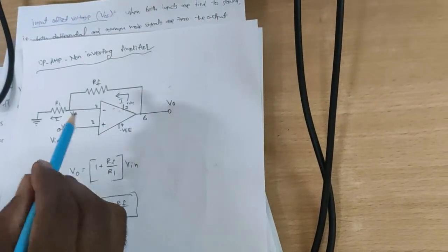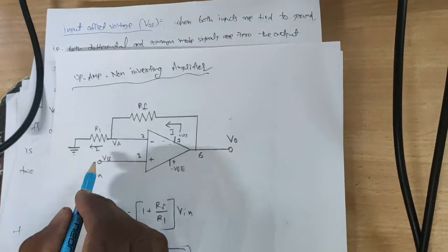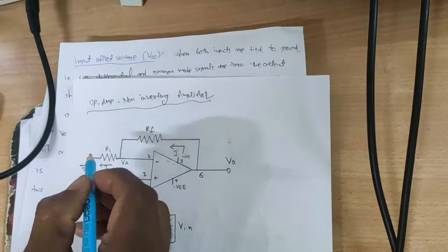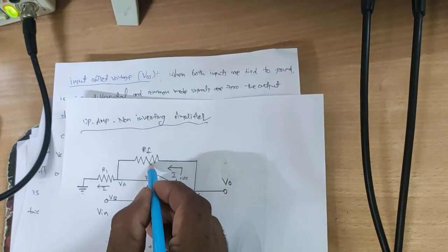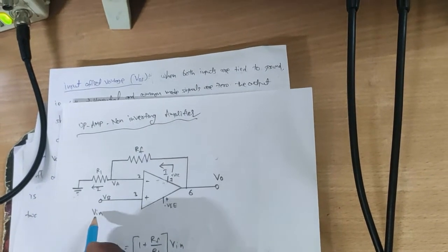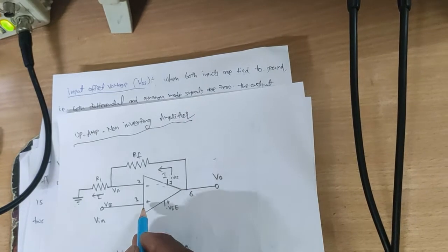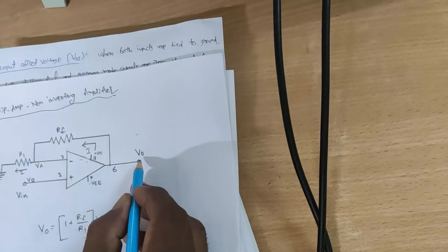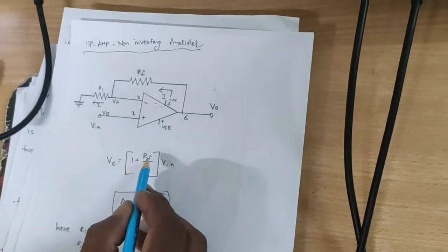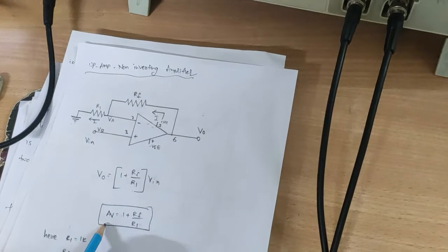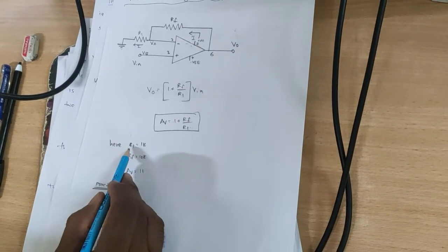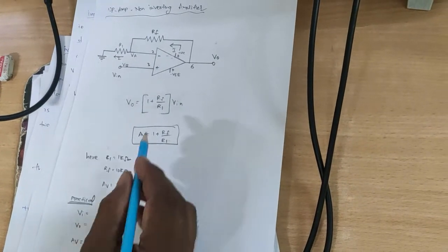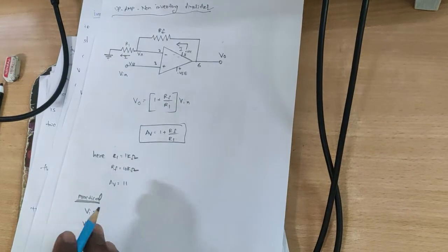Next, the Op-Amp Non-Inverting Amplifier. Here the input is given to the Non-Inverting Terminal and the Inverting Terminal is connected to ground. R1 is the input resistance and Rf is the feedback resistance. Vout equals 1 plus Rf by R1 into Vin, so Gain equals 1 plus Rf by R1. With R1 equal to 1 kΩ and Rf equal to 10 kΩ, the Gain equals 11.